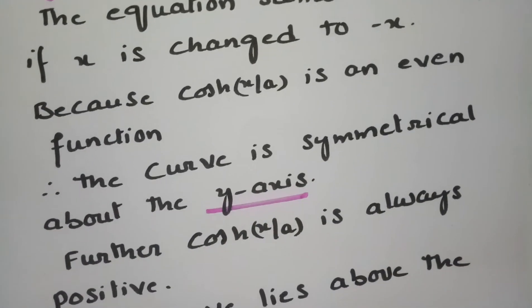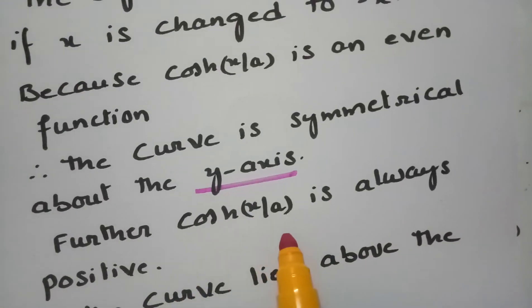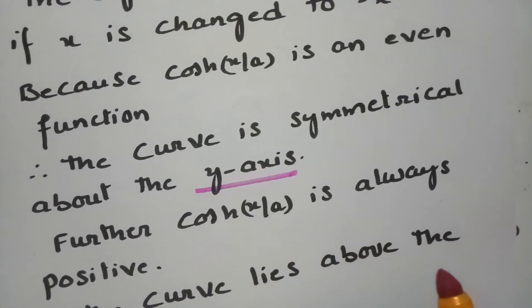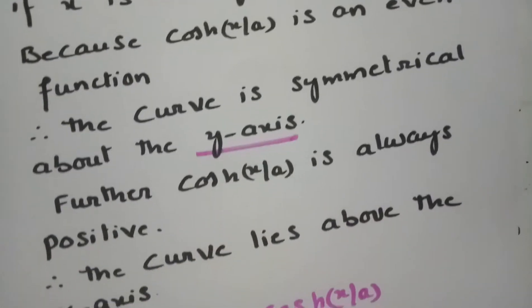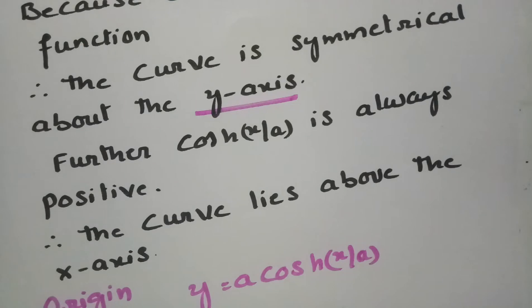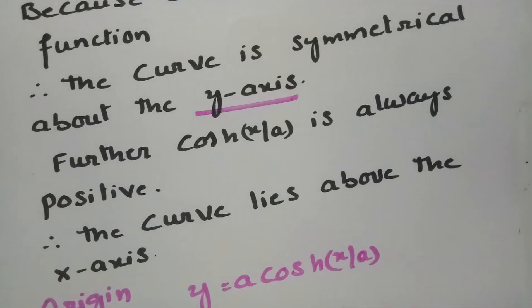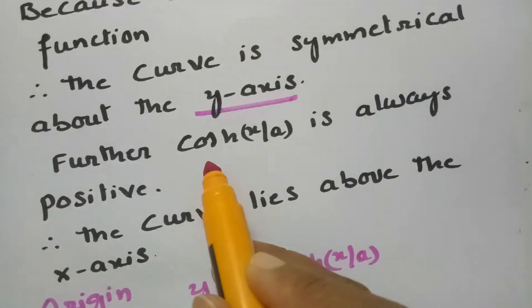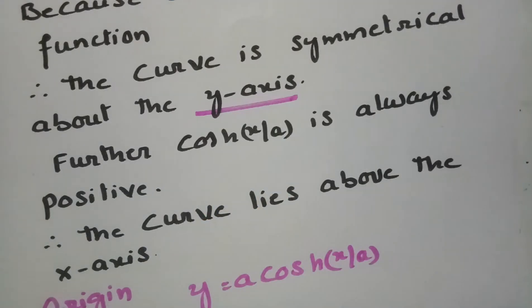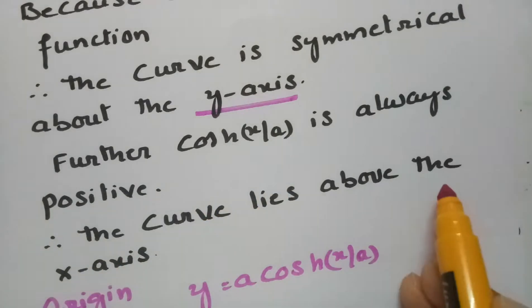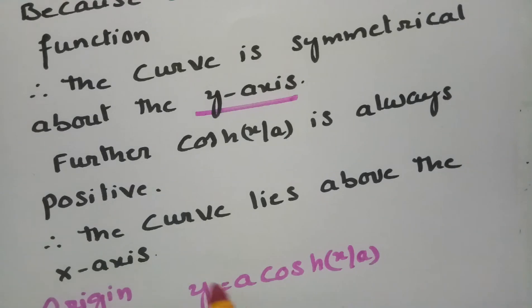Furthermore, cosh(x/a) is always positive. Therefore, the curve lies above the x-axis.